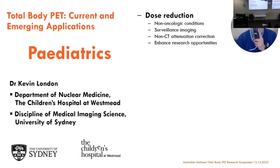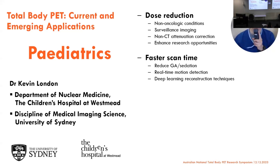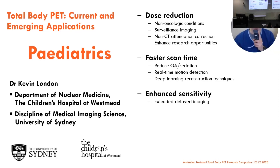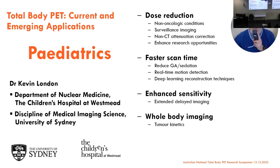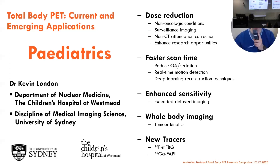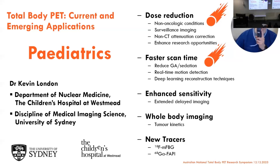To summarise: dose reduction and faster scan times are important advantages of total body PET-CT systems with direct relevance for paediatrics. Other enhancements that total body PET offers — not specific to paediatrics but also providing benefit — include enhanced sensitivity enabling delayed imaging and total body imaging for evaluation of tumour kinetics. The new tracers I described are not exclusive to total body systems but can also be employed in standard field-of-view PET-CT systems. The two key advantages for paediatrics specifically are dose reduction and faster scan times.